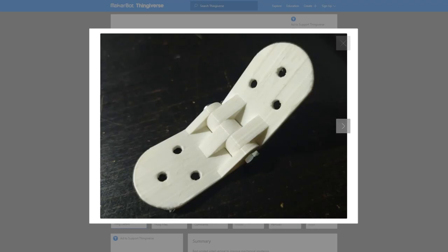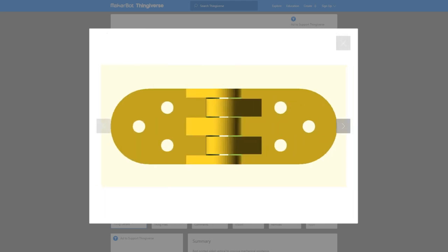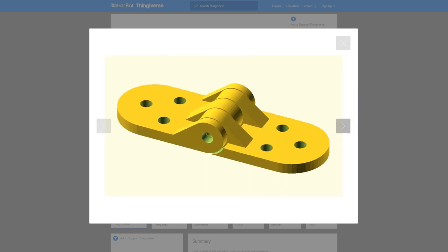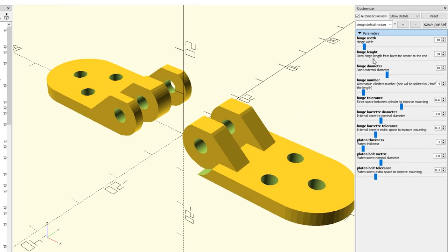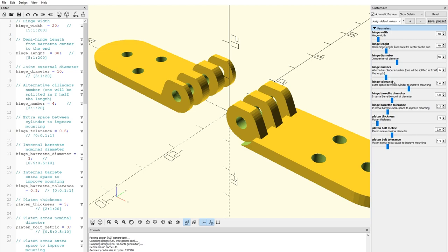But the most useful part I found this week is this parametric hinge design by Jean Bilbao. If you ever need a custom hinge for something, this design can be tweaked using the Thingiverse customizer or imported into OpenSCAD and you can adjust the width, number of hinges, size of the hinge hole, screw holes, it's all there.